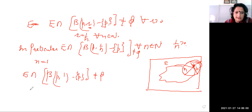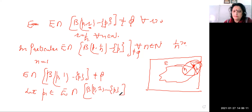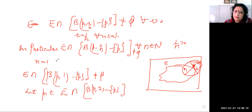So let p1 belong to E intersection with B(p, 1) minus the singleton set {p}. This set has a point in it. If the set is not empty, we can choose such a point.